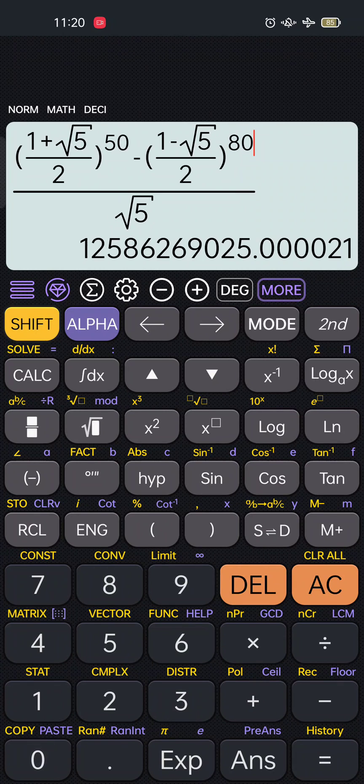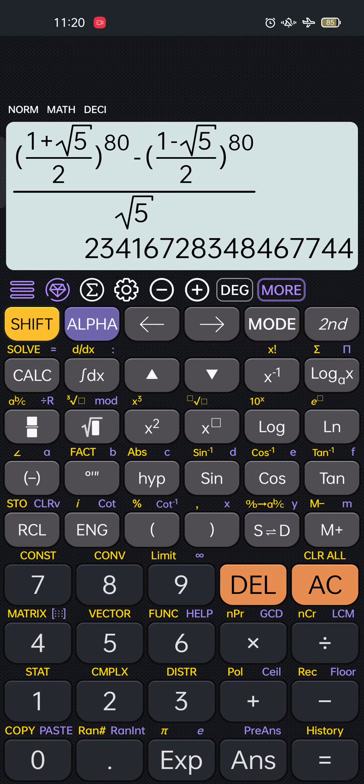Let's delete 50 and change it to 80. The same is true on the first term. So now we have the 80th term of the Fibonacci sequence. That's how you do it. Thank you.